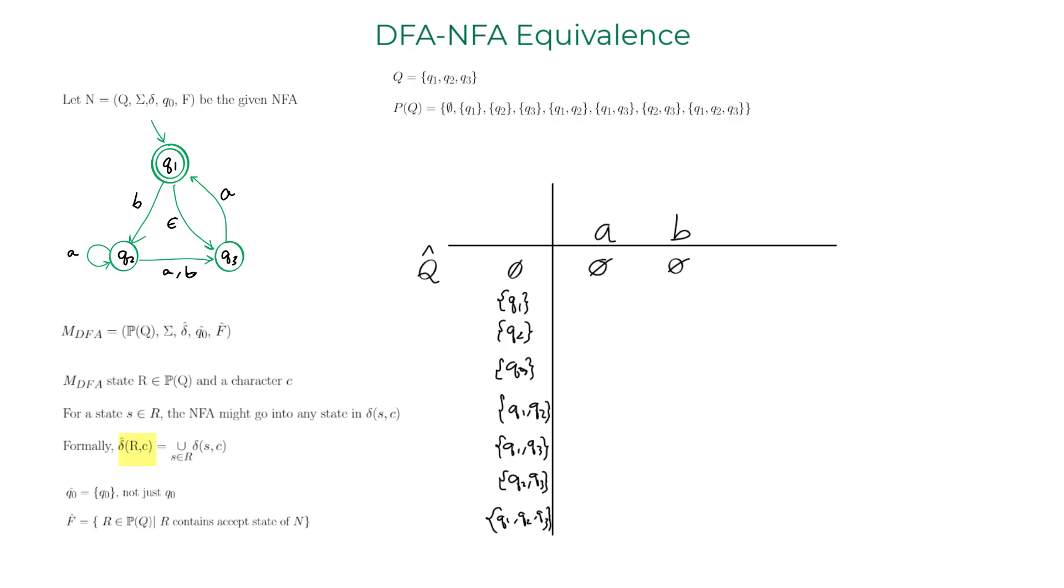For which I am going to draw the transition table right now. The transition function of DFA is defined on the set R given a character C. It would transition to set of states that is a union of all the individual transitions that happen in the NFA on character C. As empty set does not have any states in it, it would not go anywhere when presented with character A or B, which is what I have written right there.